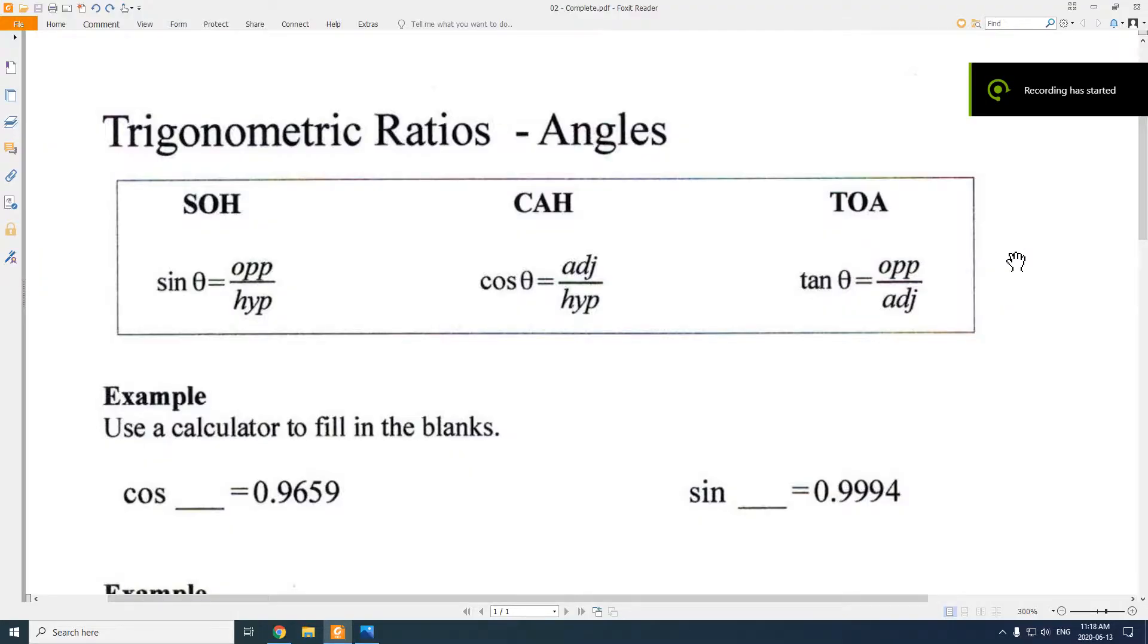So in the last lesson, we looked at these three trigonometric ratios: SOH, CAH, and TOA. What those ratios did is they connected the angle in a right-angled triangle with the ratio of two of the side lengths. Depending on which two side lengths, you would use one of these three equations, which was really just one of the three different tables that it looks up the ratios in.